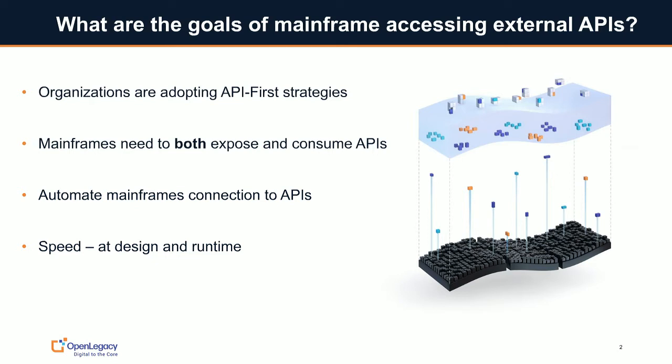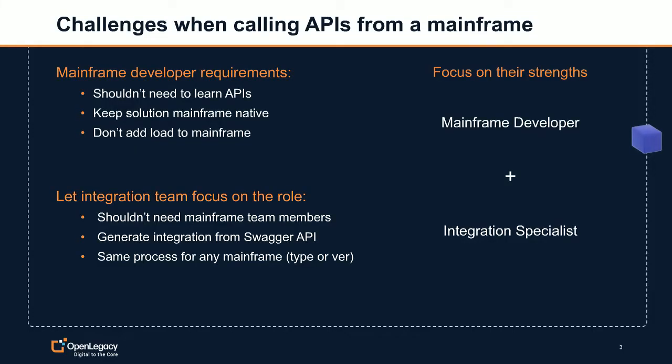Today we'll talk about how you can do that in an automated and very simple way, which leads to speed. The one thing you don't want is coupling where the mainframe people and integration people always have to be aligned. You don't want a steep learning curve for your mainframe developers — they shouldn't have to know everything about APIs. You want to keep it simple, keep it native, and have their solutions correspond to what they're doing on a day-to-day basis.